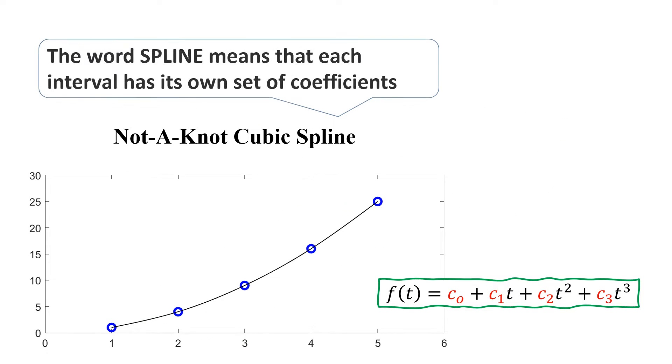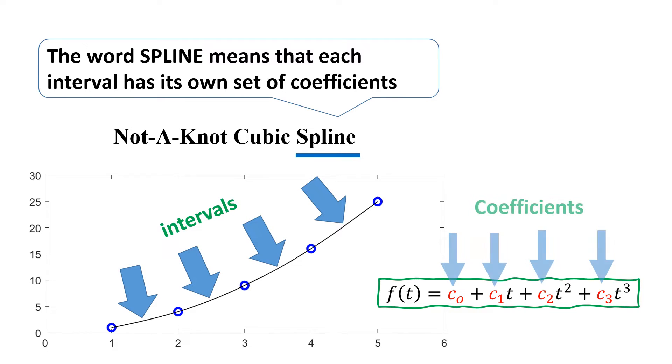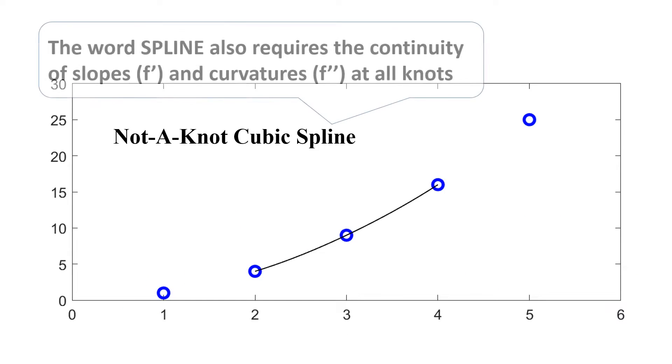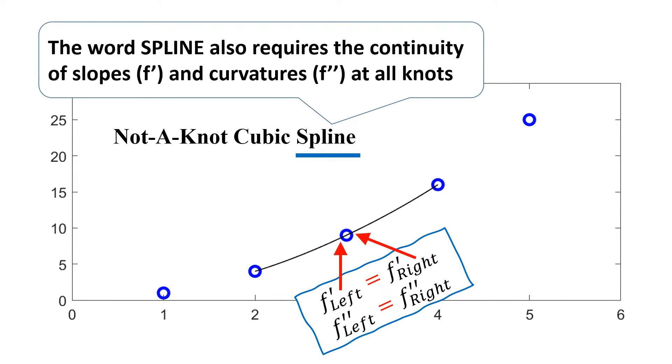The word spline means that each interval has its own set of coefficients. The word spline also requires the continuity of slopes and curvatures at all knots.